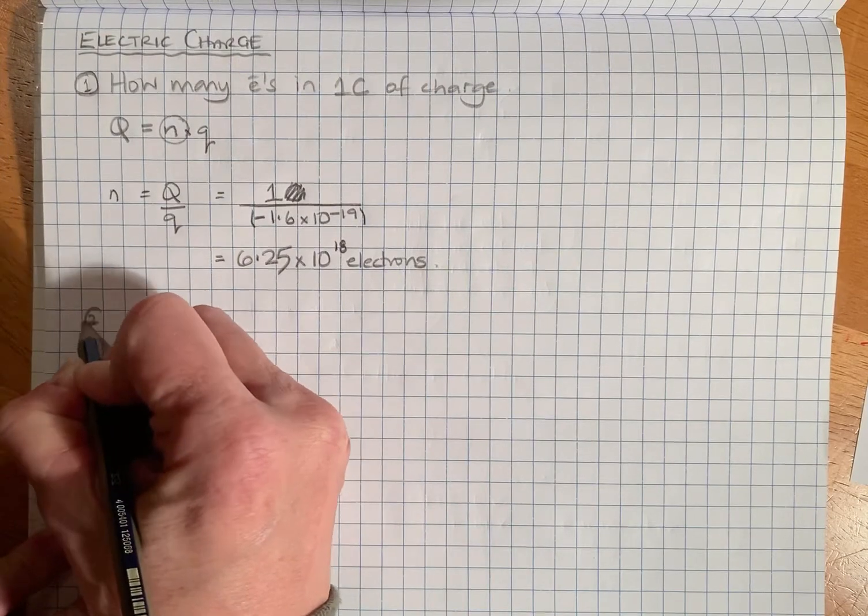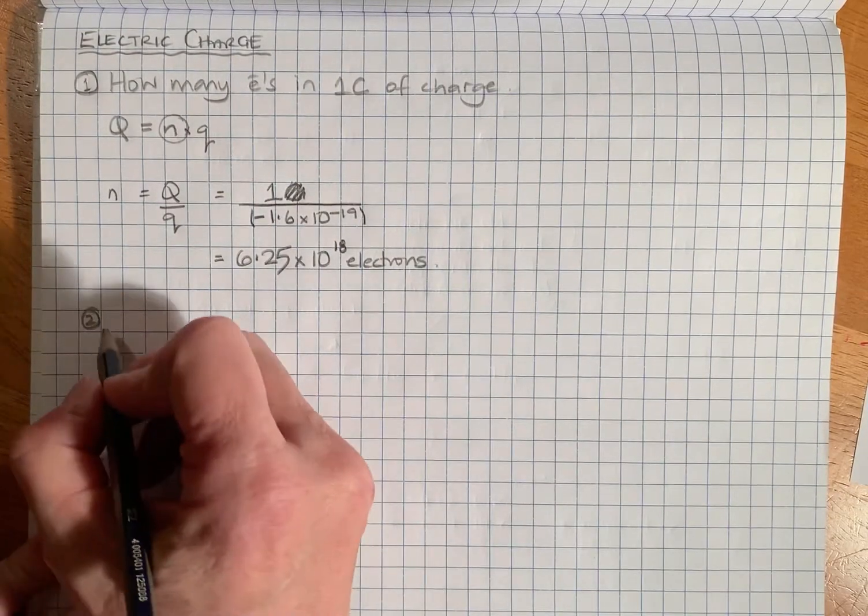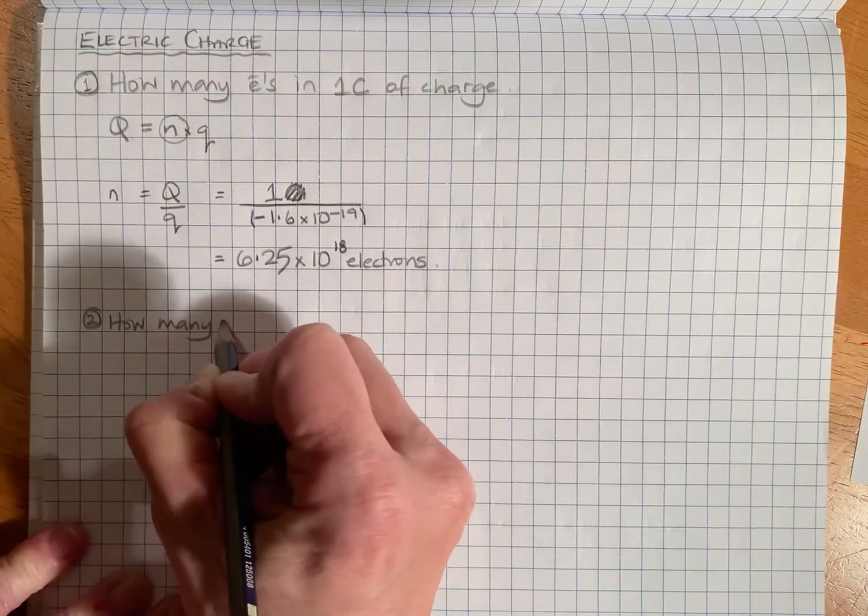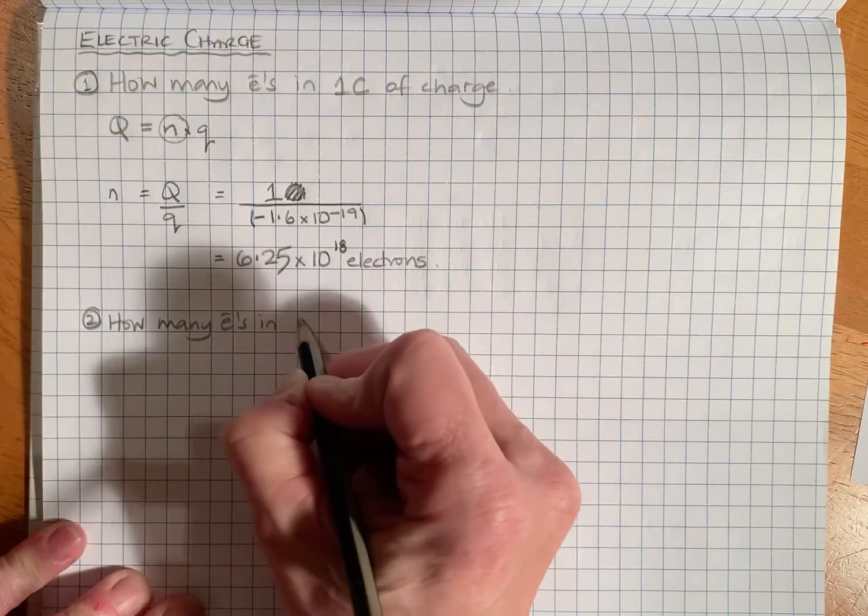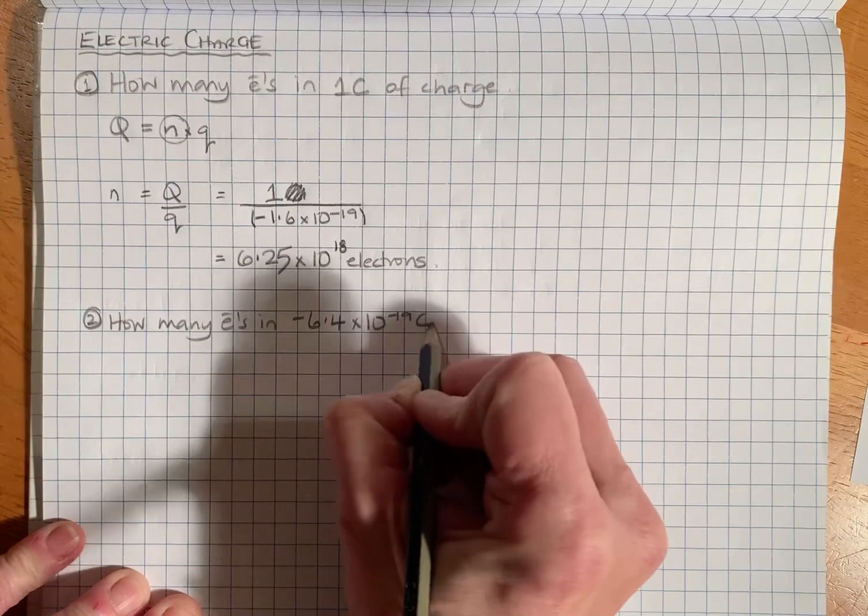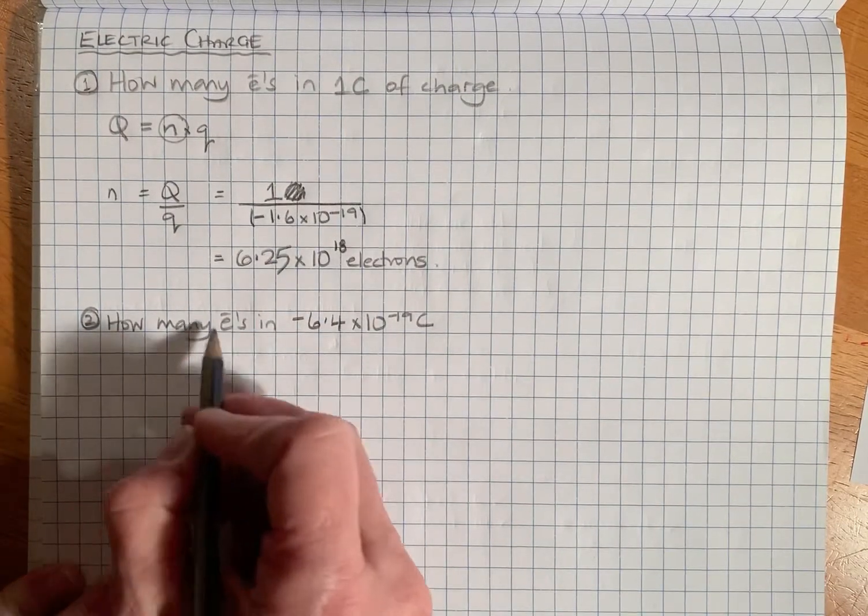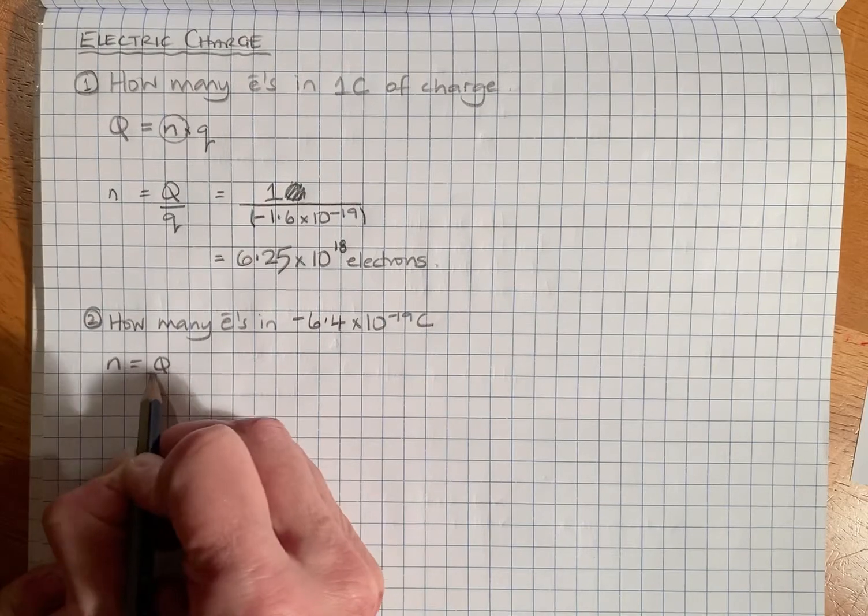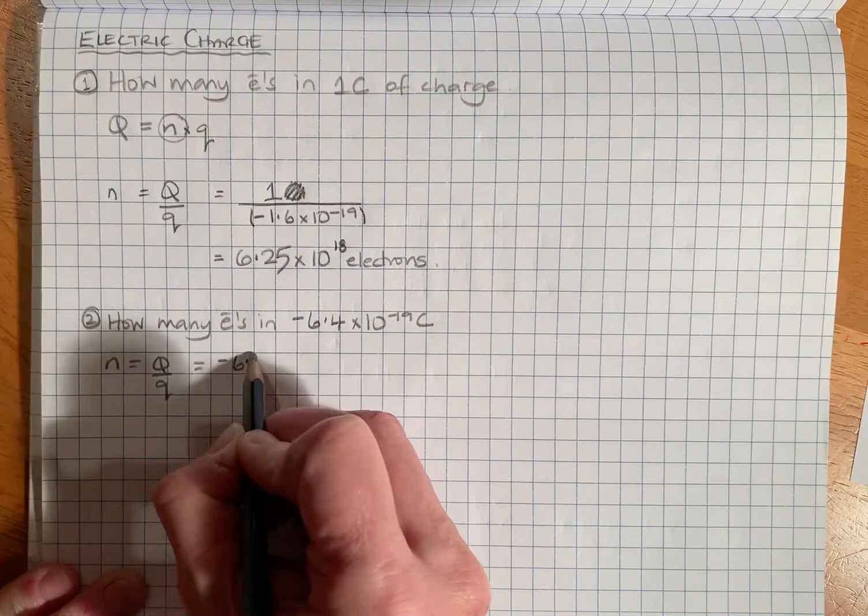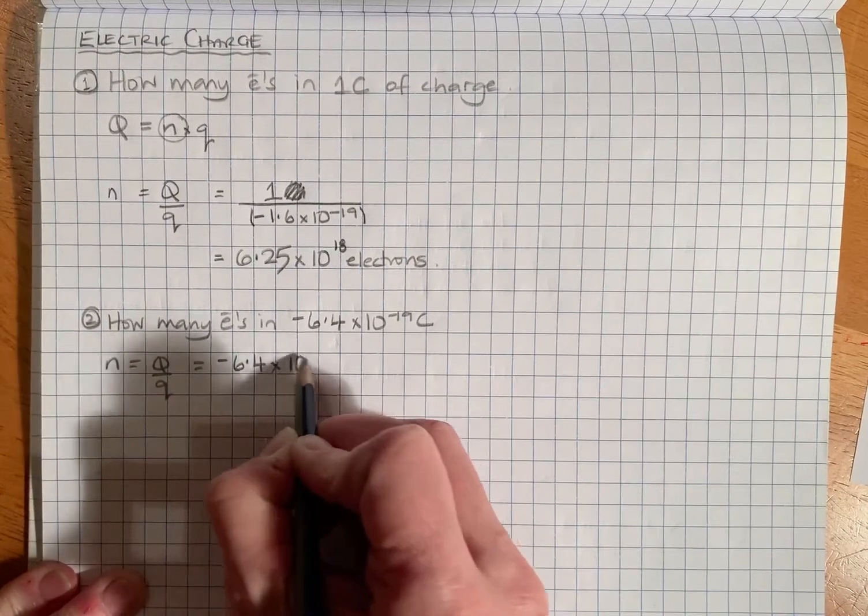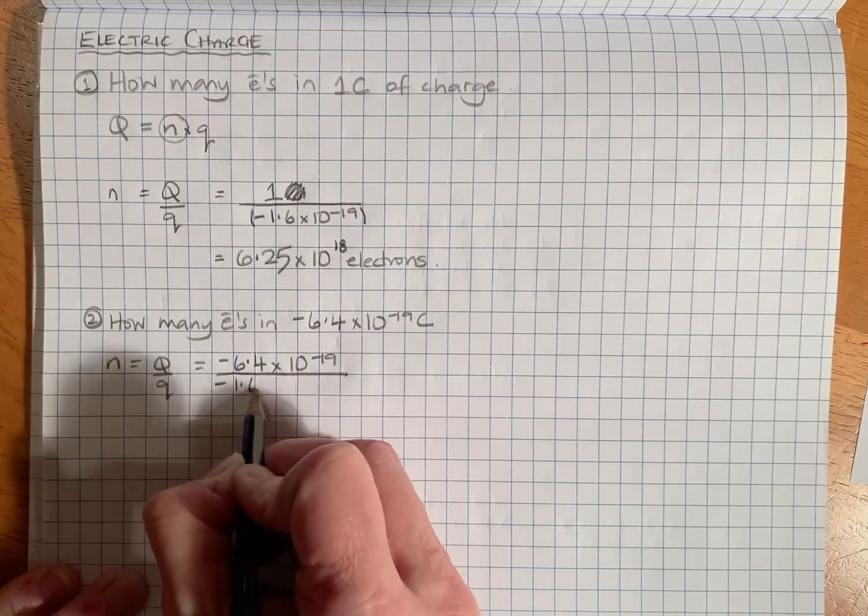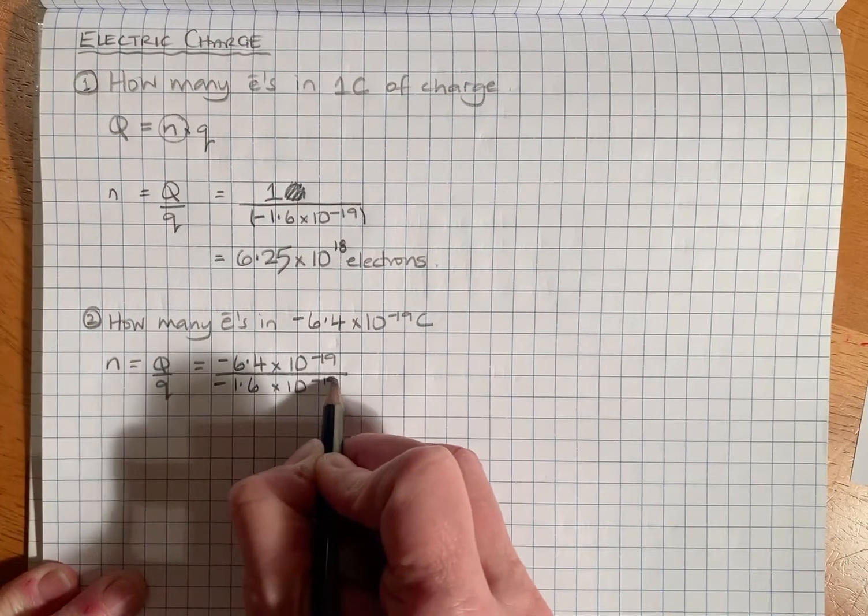Question two: how many electrons in a charge of -6.4 times 10 to the minus 19 coulombs? Again, it's asking us to find n, which equals capital Q over little q, which is -6.4 times 10 to the minus 19 over one electron, -1.6 times 10 to the minus 19.